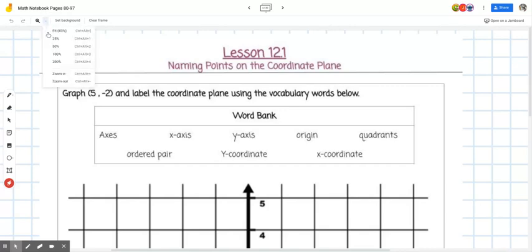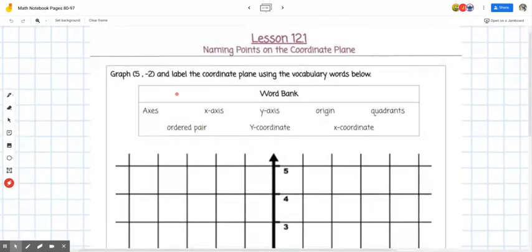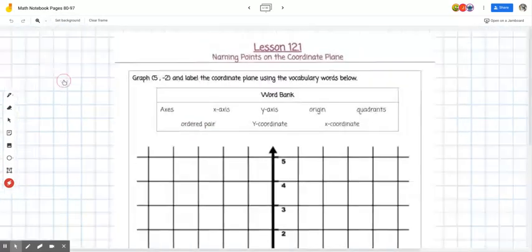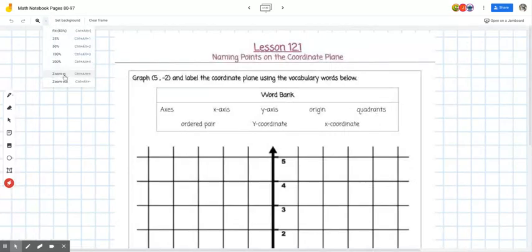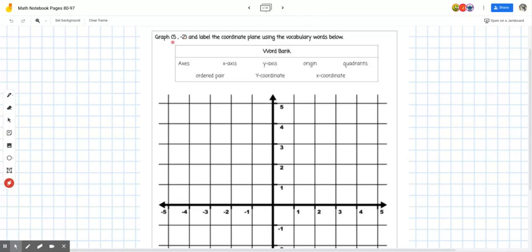But this will also be on the quiz this week and a lot of this vocabulary will be on the quiz. So I want you to pay close attention. I'm going to zoom out actually because I need to be able to see the coordinate grid a little bit better. And it says at the top, the directions say graph the ordered pair (5, -2) and label the coordinate plane using the vocabulary words below.